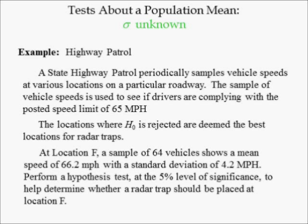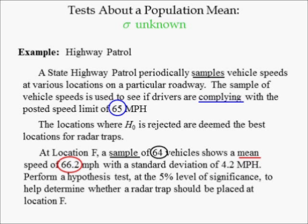In this example, we look at the highway patrol. A state highway patrol periodically samples vehicle speeds at various locations on a particular roadway. The sample of vehicle speeds is used to see if drivers are complying with the posted speed limit of 65 miles per hour. The locations where the null hypothesis is rejected are deemed the best locations for radar speed traps. At location F, a sample of 64 vehicles shows an average speed of 66.2 miles per hour with a standard deviation of 4.2 miles per hour. Perform a hypothesis test at the 5% level of significance to determine whether a radar trap should be placed at location F.